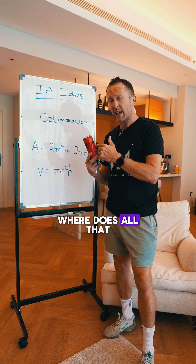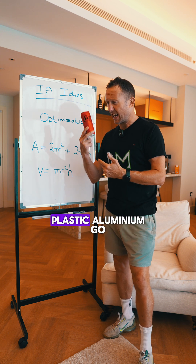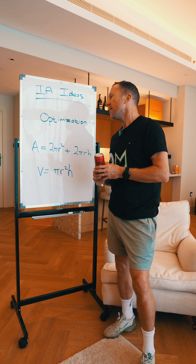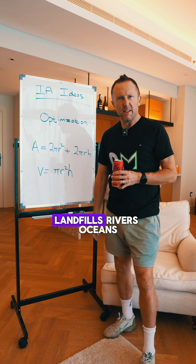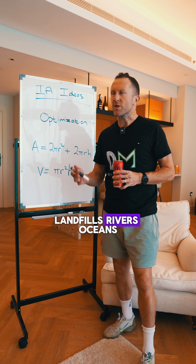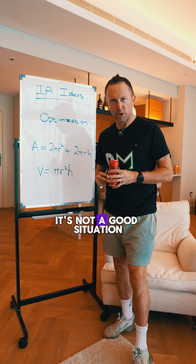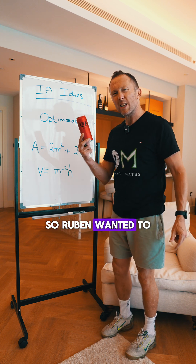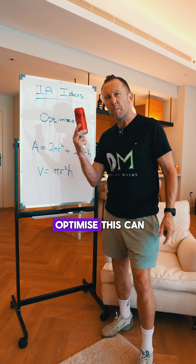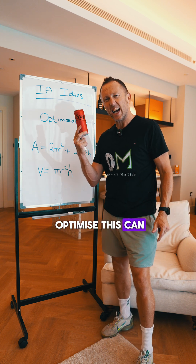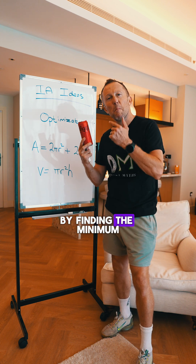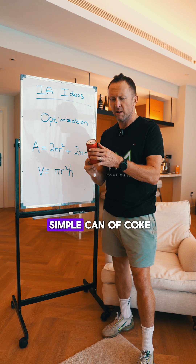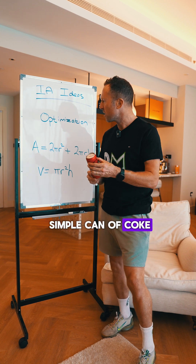Now, where does all that plastic and aluminium go? Landfills, rivers, oceans. It's not a good situation. So Ruben wanted to optimize this can by finding the minimum surface area of your simple can of Coke.